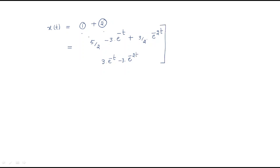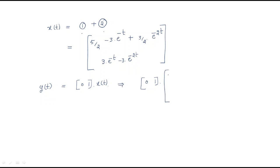Now our requirement is to find the output y(t). The output equation is y(t) = C·x(t), where C = [0, 1]. So y(t) = [0, 1] · [5/2 - 3e^(-t) + 3/2·e^(-2t), 3e^(-t) - 3e^(-2t)]ᵀ.